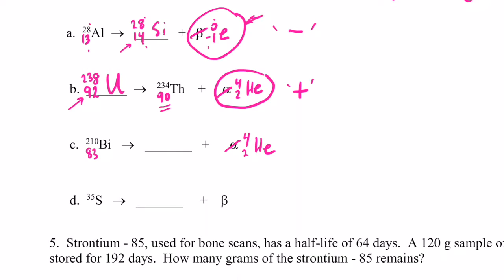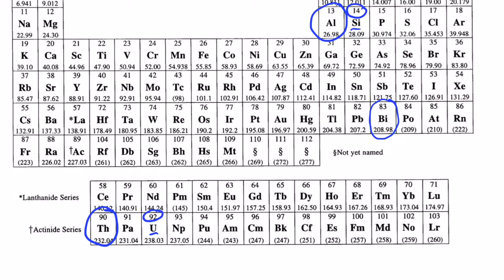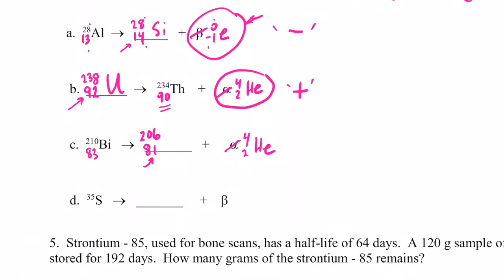So it will emit two protons and two neutrons from its nucleus. So the atomic number of the new particle will only be 81. And the mass will go down by 4, because remember it lost two protons and two neutrons. So now it's 206. So let's see what element 81 is. So go back to our periodic table. And element 81 looks like it's thallium, Tl.